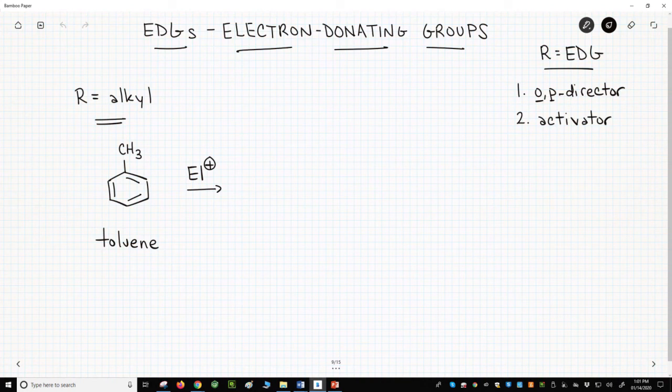I put electron donating groups into two categories. The first type of EDG is the alkyl group. Let's react toluene, an alkylbenzene, with a strong electrophile and put the electrophile on the para carbon.